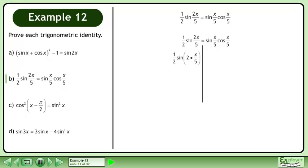Rewrite 2x/5 as 2 times x/5. Expand using the double angle sin identity. The 2's cancel, giving us sin(x/5) times cos(x/5). The left side equals the right side, completing the proof.